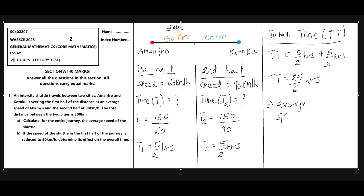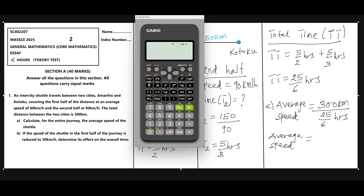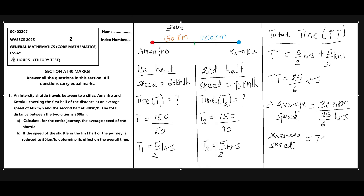The average speed for the entire journey equals total distance divided by total time: 300 kilometers divided by 25/6 hours. This gives us 72 kilometers per hour. That is the answer for Part A of the question.